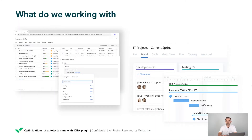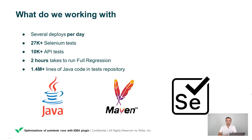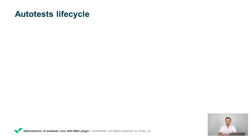A few words about RAIC and our technical environment for context. RAIC is a collaborative work management platform that helps teams and companies all over the world be more effective and productive. It's a very powerful product, that's why it has a lot of UI elements and logic that should be tested. To be able to have several deploys per day, we have 27,000 Selenium tests and more than 10,000 API tests. Our full deploy regression takes up to 2 hours, and our project has more than 1.4 million lines of Java code. All of this is mainly based on Java, Maven, and Selenium technologies.